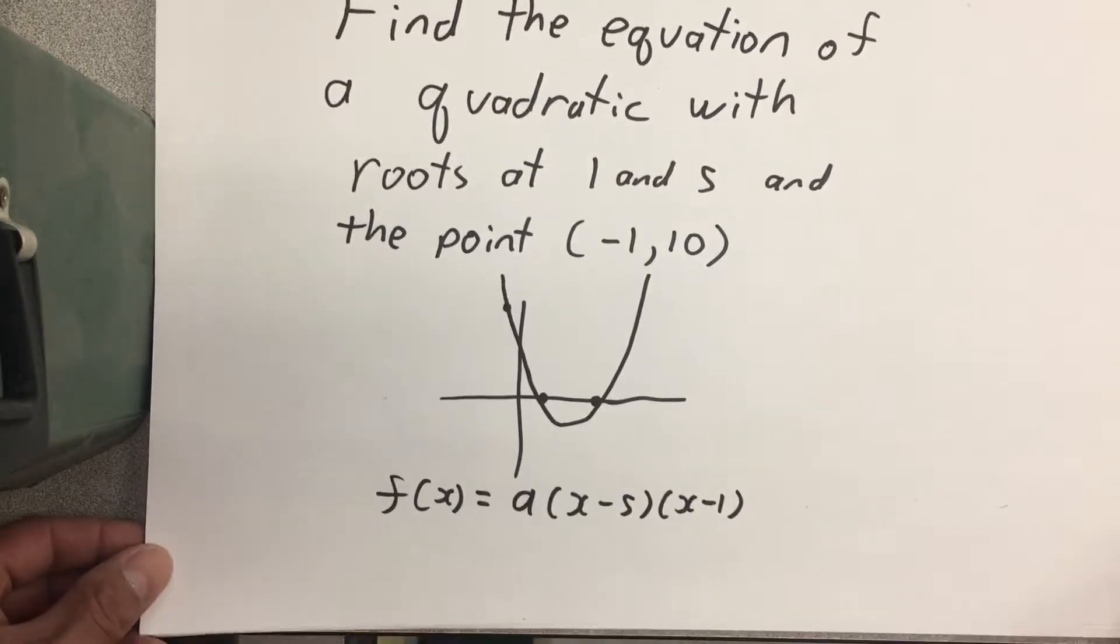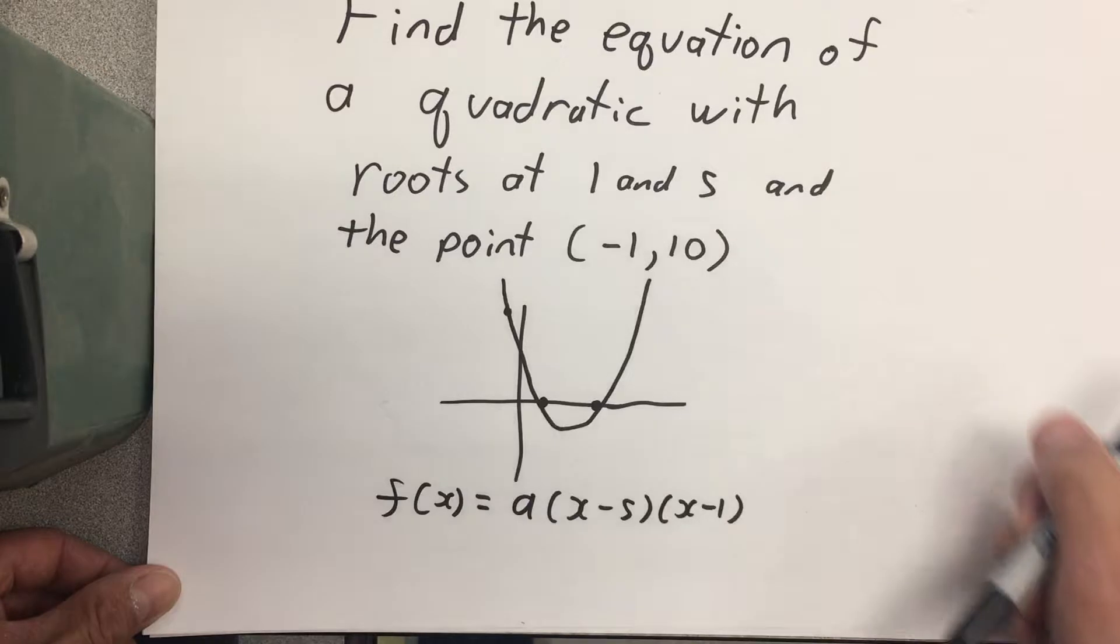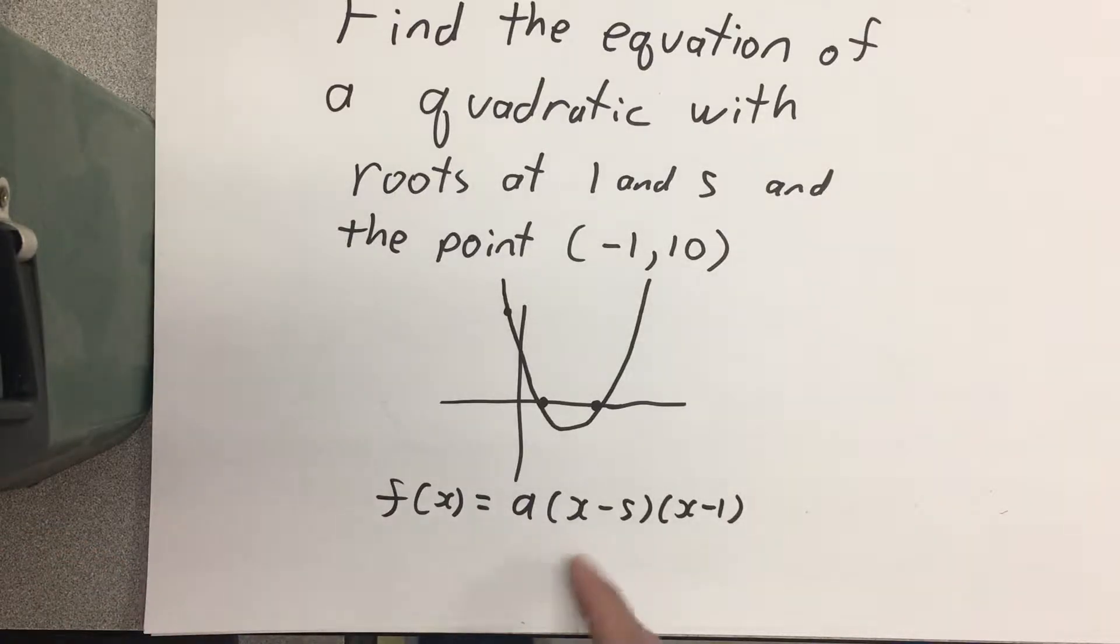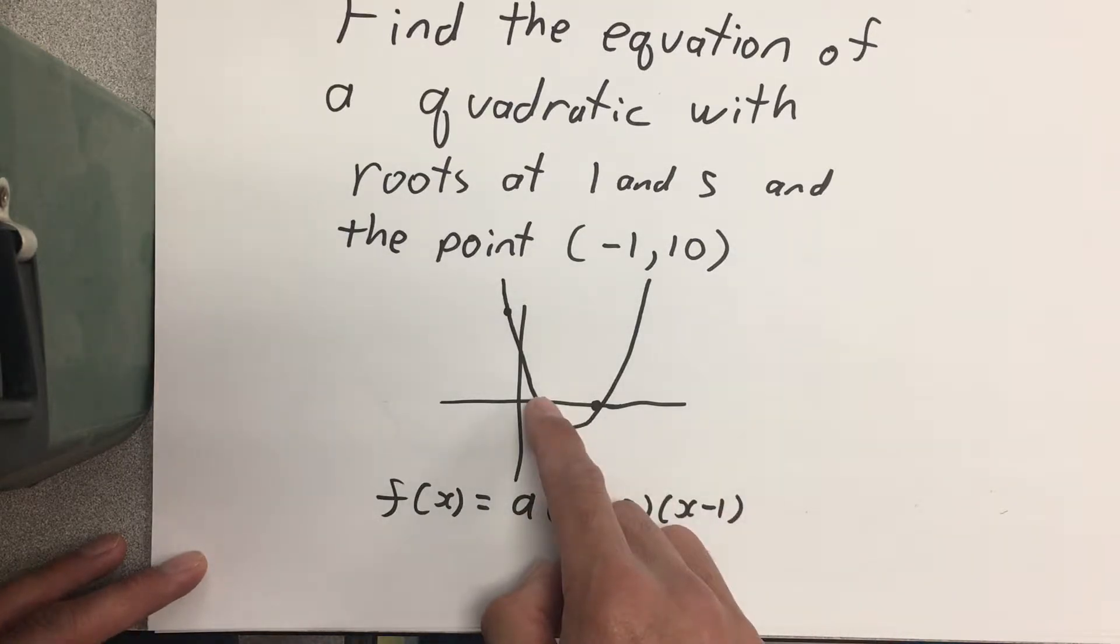Now here's why this works. We need roots at 1 and 5. That is to say, if the value of x is 5, this whole thing will become 0, bringing us here. And if the value of x is 1, 1 minus 1 is 0, the whole thing again becomes 0, bringing us here.